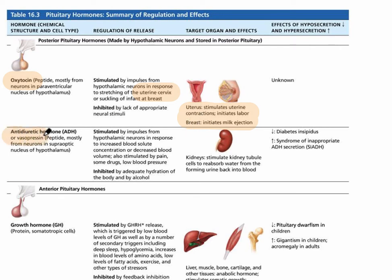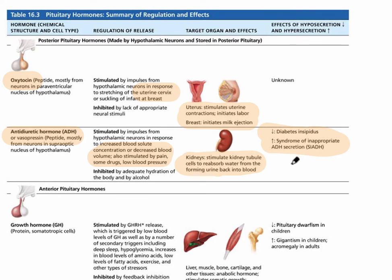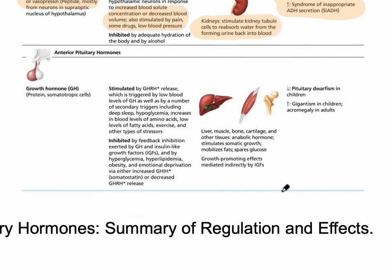The second hormone released from the posterior pituitary gland is anti-diuretic hormone (ADH). It is stimulated by increased solute concentration — meaning the blood has become more concentrated with solutes — or by low blood pressure. This signals a need to put more water back into the blood, so water is reabsorbed in the kidneys. A lack of ADH leads to diabetes insipidus; too much leads to syndrome of inappropriate ADH secretion (SIADH).